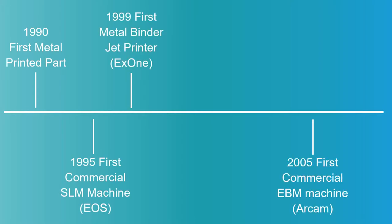Now let's talk about metal printing. Metal printing has a shorter history than plastic printing, but its use has increased significantly, especially when talking about production part manufacturing. Metal printing came on the scene early in the 1990s, although there was research done before that. Between 1995 and 2005, new metal printing technologies rapidly entered the market, and we're going to talk about several of those today.